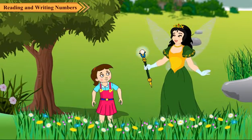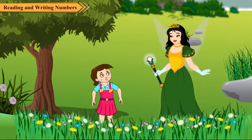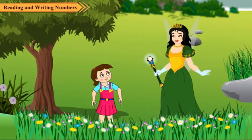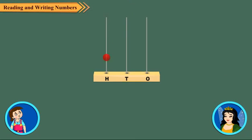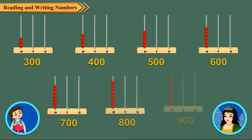We form numbers greater than 200 in the same way as earlier. To represent 200 on the abacus, we put two beads on the hundreds rod. Similarly, we represent other hundreds on the abacus.